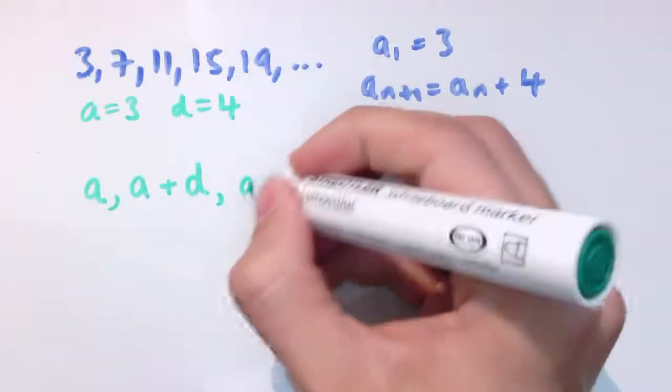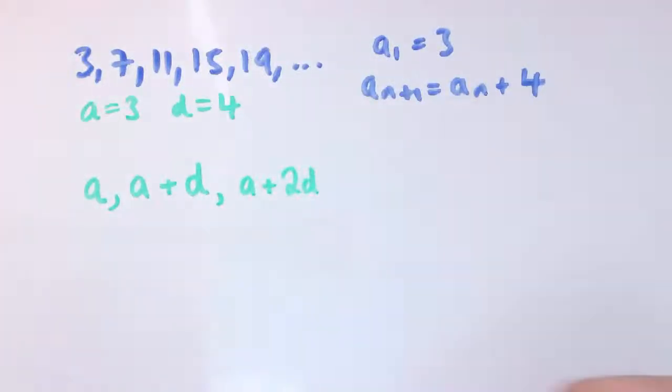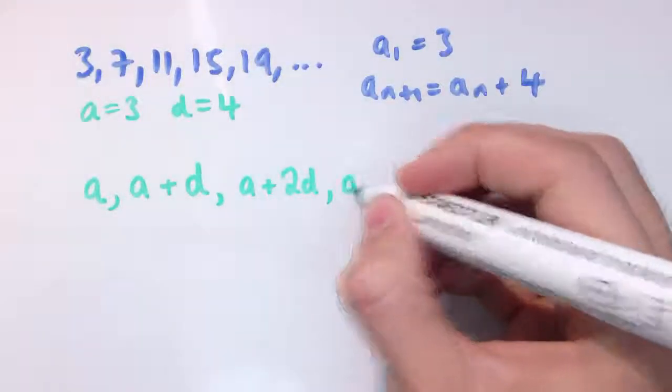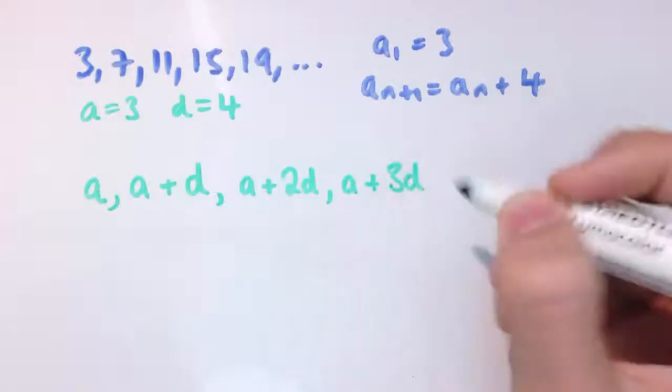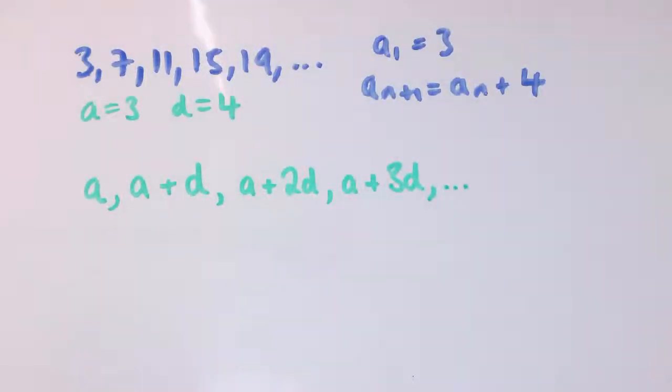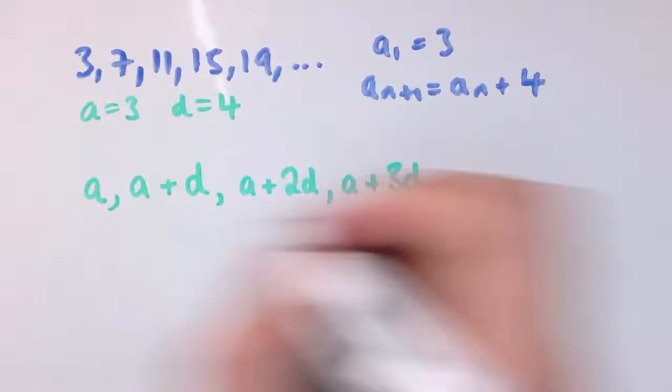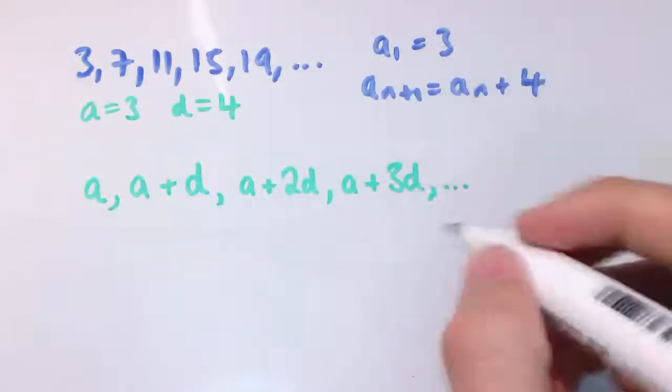So if I add on d again I get a plus 2 times d. If I add on d again I get a plus 3 times d, etc. So this would be my sequence.